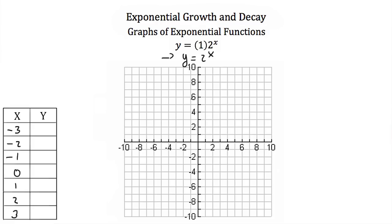If I plug in negative 3 for x, I'll have y is equal to 2 to the negative third power. When you have a negative power, the term goes in the denominator, so I can write this as 1 over 2 to the third power. 2 to the third power is 8, so this is 1/8. When my x value is negative 3, my y value is 1/8.